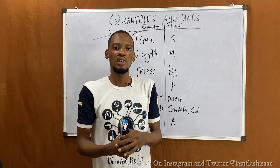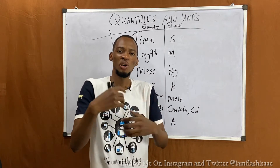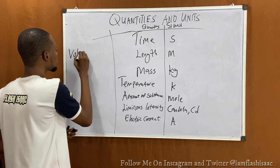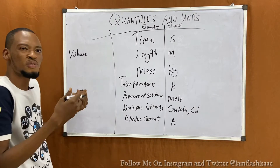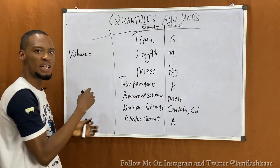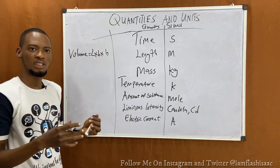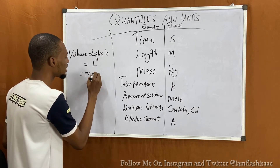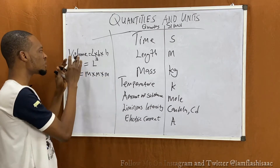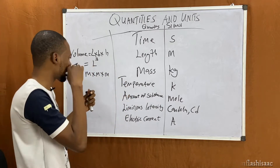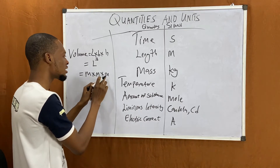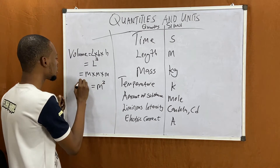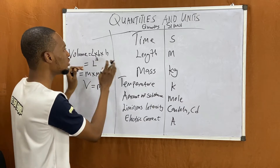Now let's look at derived quantities and how they get their units. The first derived quantity is volume. Volume is length times breadth times height — L × B × H — which is also written as L cubed. Since length, breadth, and height are all distances, volume is m × m × m, which equals meter cubed (m³). So we've derived volume from fundamental quantities.